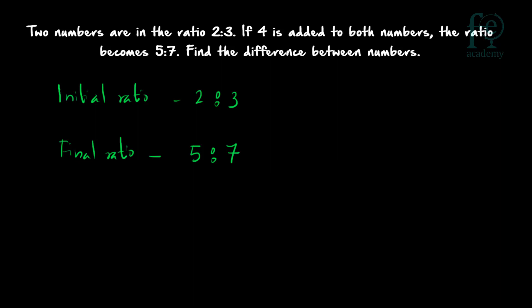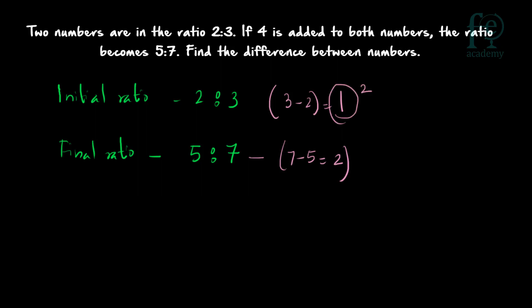The first step is to find the difference between antecedent and consequent in both ratios. In the final ratio: 7 minus 5 equals 2. In the initial ratio: 3 minus 2 equals 1. The differences are not the same — the final ratio difference is 2 but the initial ratio difference is 1. So the first step is to make the differences equal: multiply the initial ratio terms by 2, giving 4 is to 6. Now 6 minus 4 equals 2, matching the final ratio.